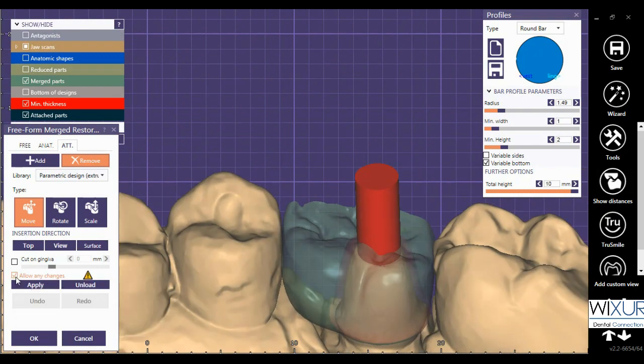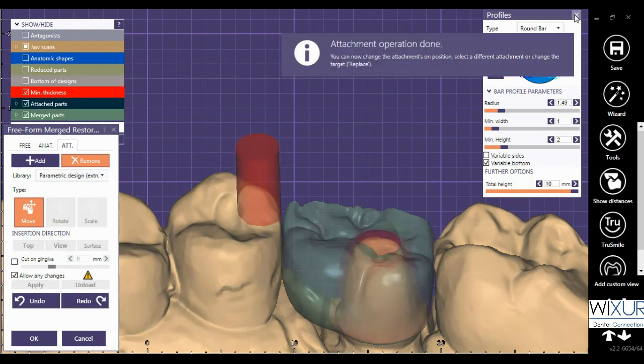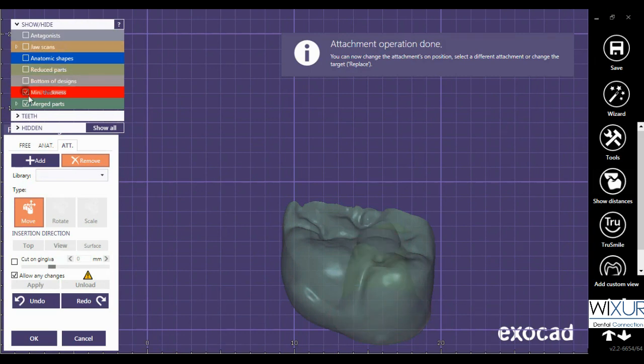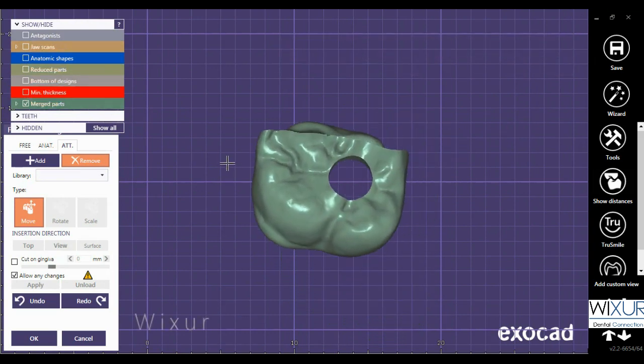Don't forget to check the box to allow any change. Click Apply, and the crown is ready. Thank you for watching Vixer YouTube channel.